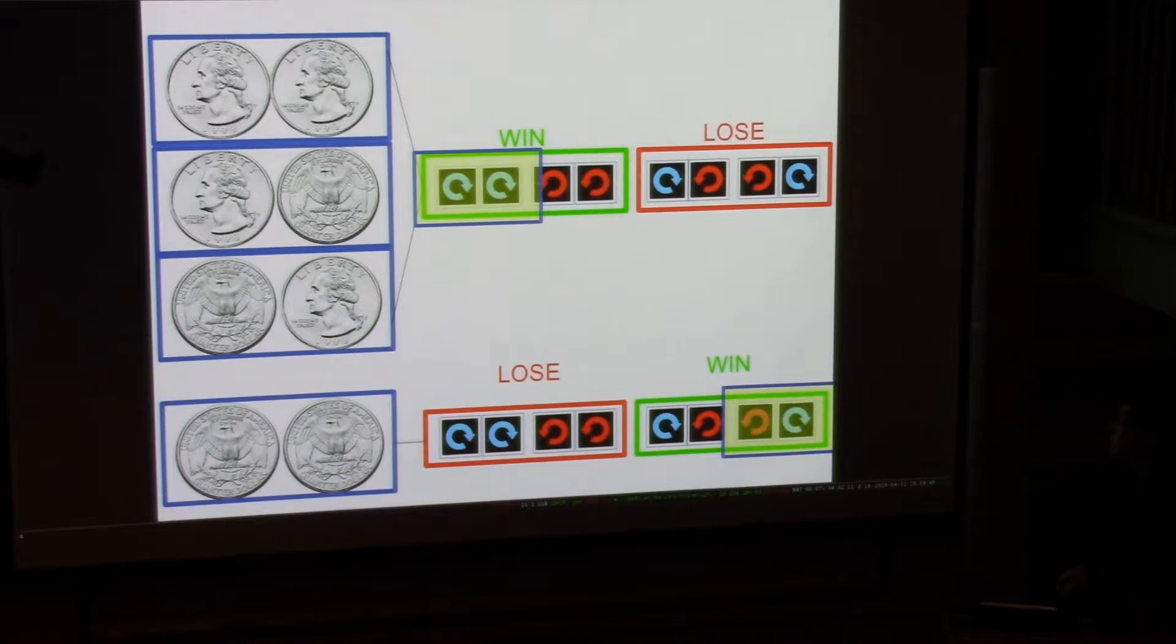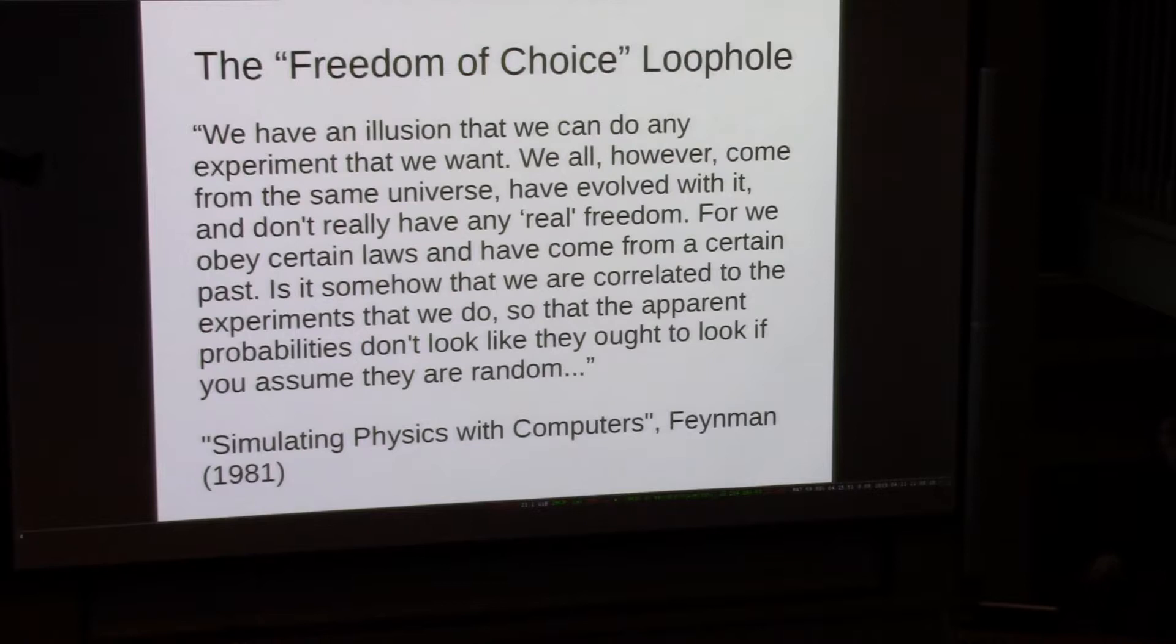The thing that Michael Hall came along with in 2010 is what we call the freedom of choice loophole. This is a mechanism by which you can sort of cheat at this game in order to reproduce 85% with classical dice. Let's take that strategy we had earlier, where we arrange the dice to come up blue every single time. And let's consider the possibility that Alice can somehow predict how Bob's quarters are going to come. This is sort of like what you mentioned earlier with the phone call.